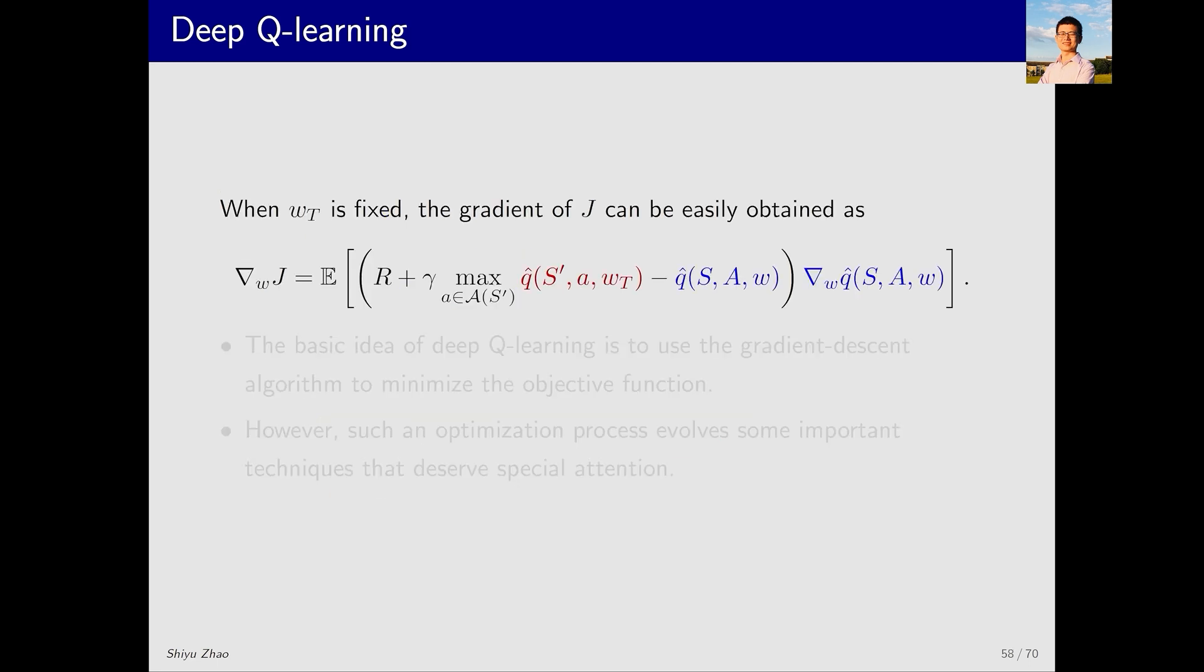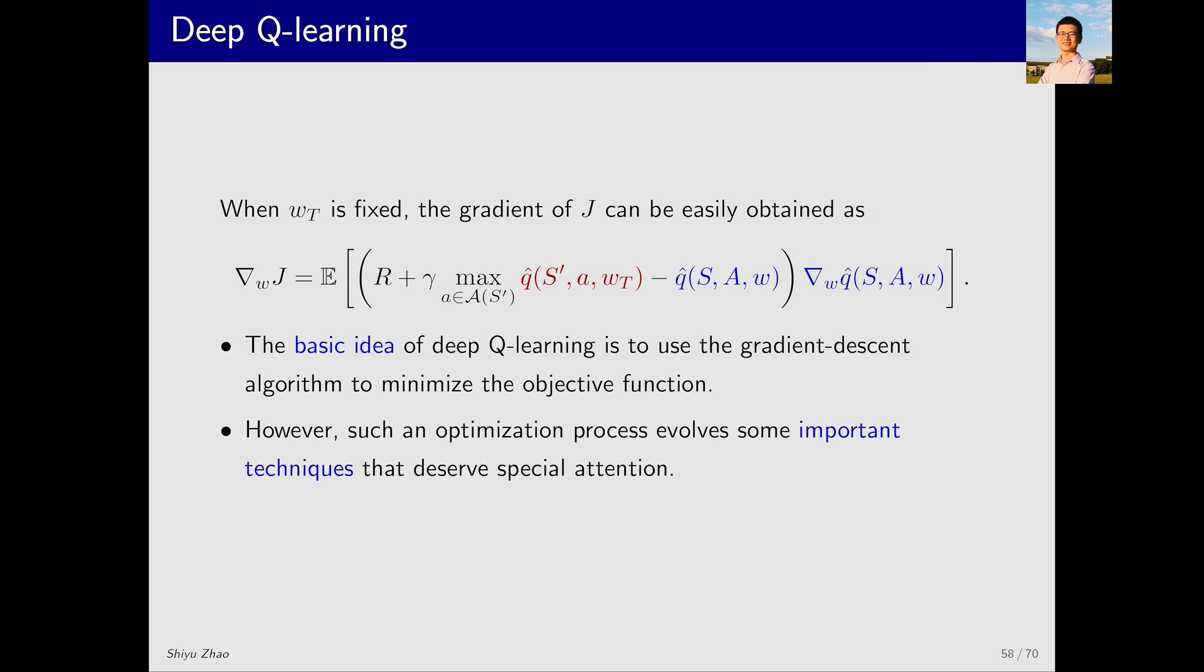Based on the objective function, we can compute its gradient, which looks like this. As you can see, the gradient only involves the blue Q hat, and there's no gradient concerning the red Q hat. The basic idea of deep Q-learning is to use the gradient descent algorithm to minimize the objective function. This might involve some techniques. Let's now discuss these techniques in more detail.